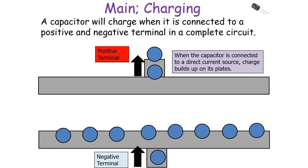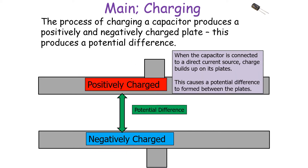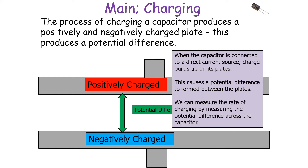When the capacitor is connected to a direct current source, charge builds up on the plates and the direction of electron movement is towards the positive terminal. The electrons leave the negative terminal and go onto the negative plate, and they leave the positive plate and head towards the positive terminal. This causes a potential difference to form between the plates. We can measure the rate of charging by measuring this potential difference across the capacitor, since over time the greater the charge imbalance, the greater the potential difference.